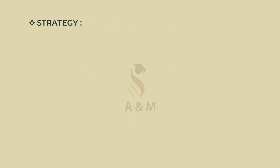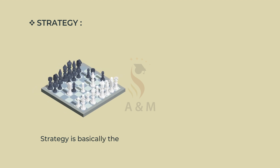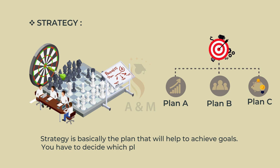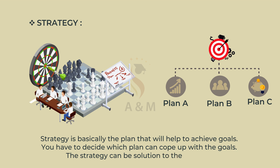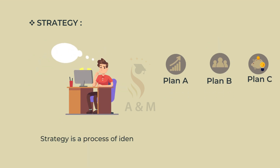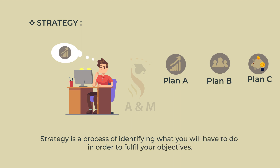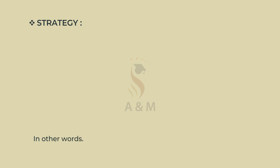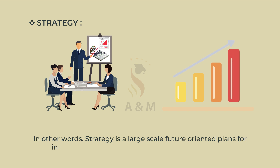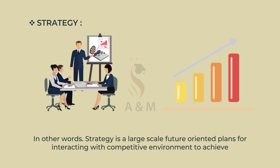Next, Strategy. Strategy is basically the plan that will help to achieve the goals. You have to decide which plan can cope with the goals. The strategy can be the solution for the problem. Strategy is the process of identifying what you will have to do in order to fulfill your objectives. In other words, strategy is a large-scale, future-oriented plan for interacting with the competitive environment to achieve a company's objectives.